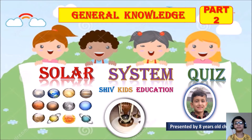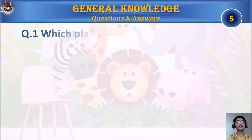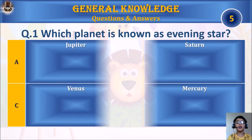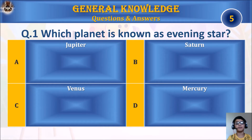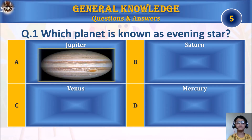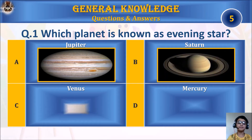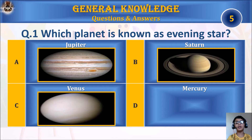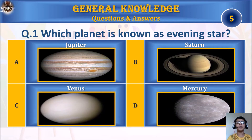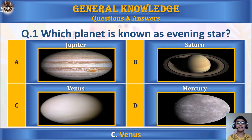Part 2. Question 1: Which planet is known as the evening star? A. Jupiter, B. Saturn, C. Venus, or D. Mercury. Your time starts. The answer is C. Venus.